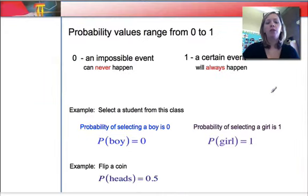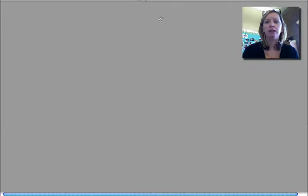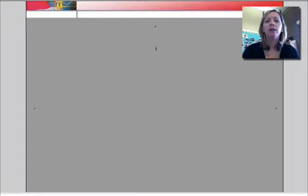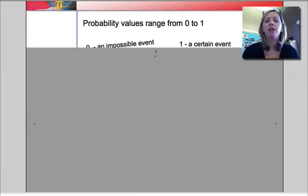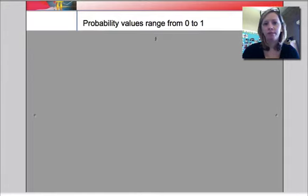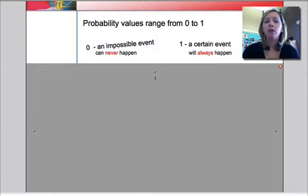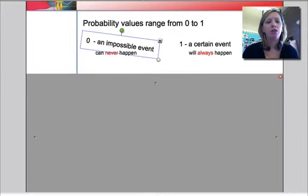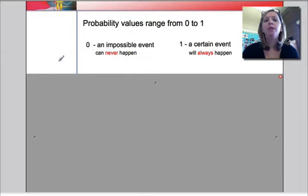Okay, so the first thing that I want to remind you of, let's maybe break this down into some smaller pieces here. The first thing I want to remind you of is that probability values can only range between 0 and 1. A probability of 0 means that an event can never happen. So a probability of 0 means an event can never happen.